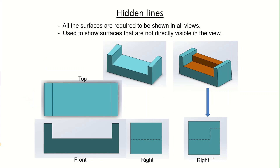Hidden lines are extremely important to show in an engineering drawing — without them it is very difficult to understand the drawing. For example, from the top view we are able to see three faces, which are clearly marked and completely visible. From the front view we see the surface normal to the front view direction. But from the right side view direction, we are no longer able to see the flat face in the middle of the solid component.